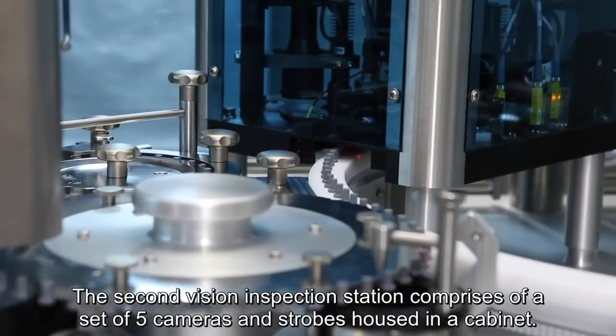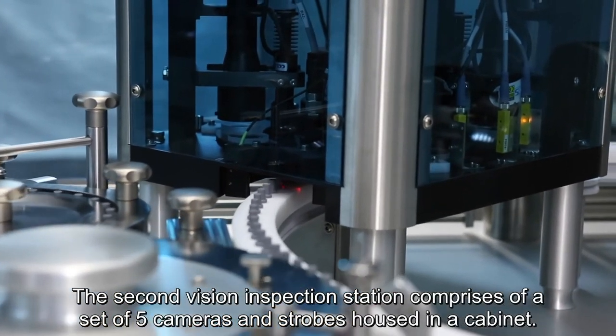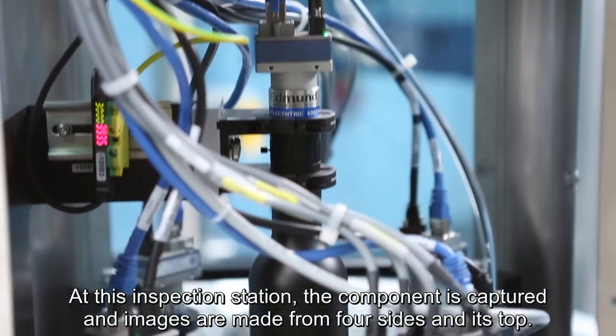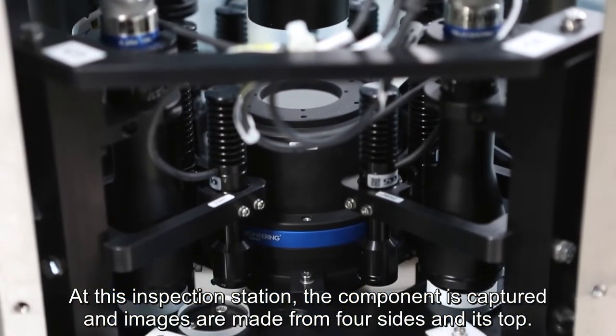The second vision inspection station comprises a set of five cameras and strobes housed in a cabinet. At this station, the component is captured and images are made from four sides and its top.